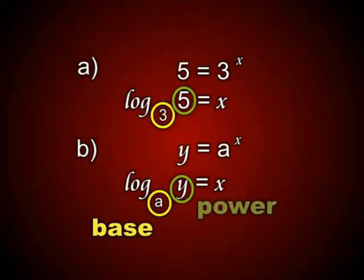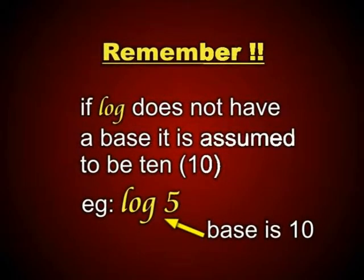The y, or in the previous example the 5, is known as the power. In the absence of a base, because we're using log spelled 'log', we assume that the base is 10 if there is nothing else there. Similar to the previous tutorial where with square roots if there wasn't a number we assumed it to be 2, with logs if there is no base we assume it to be 10.